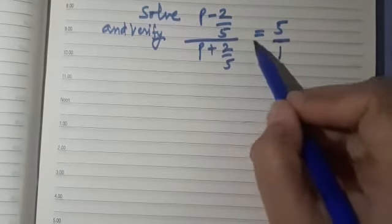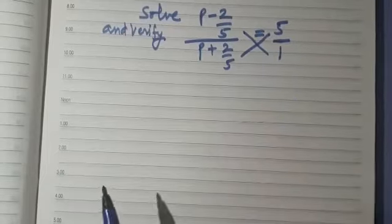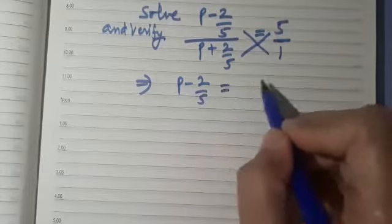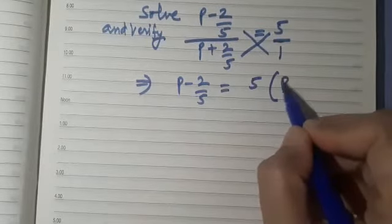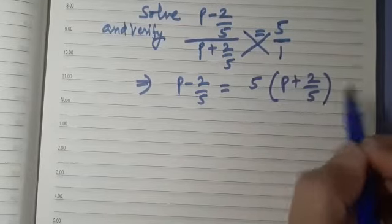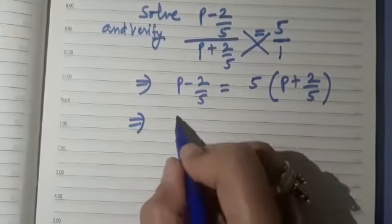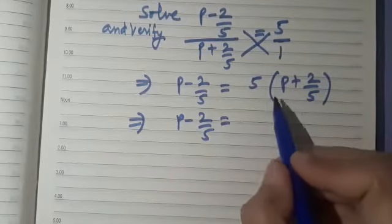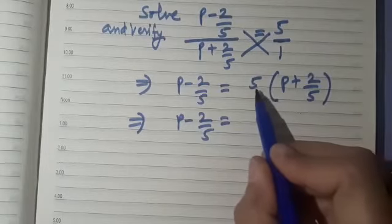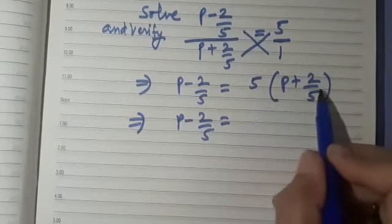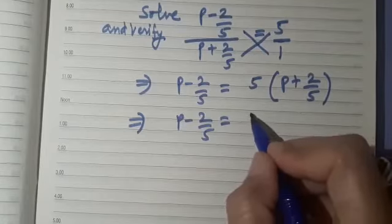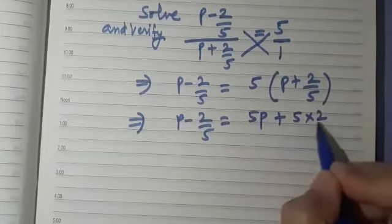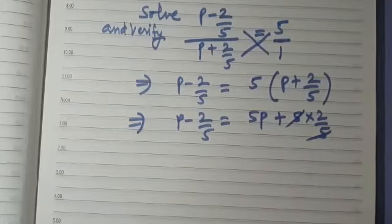Using cross multiplication, this implies p minus 2/5 is equal to 5 into (p plus 2/5). We will multiply 5 by both the terms in the bracket, so we get 5p plus 5 into 2/5.